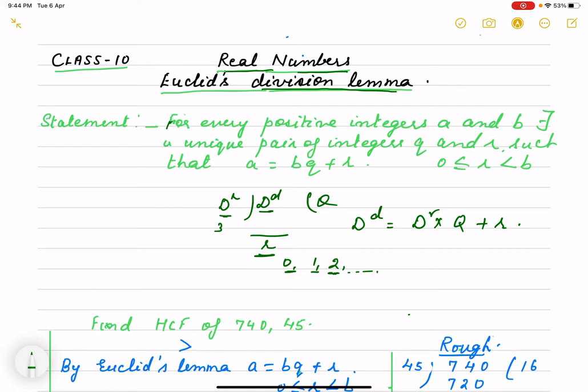Same thing we use in Euclid's lemma and it states that if A and B are positive integers, then A equals to BQ plus R. That means what? A is dividend, B is divisor, Q is quotient and R is remainder. And value of R is between 0, from 0 and it will be less than divisor.